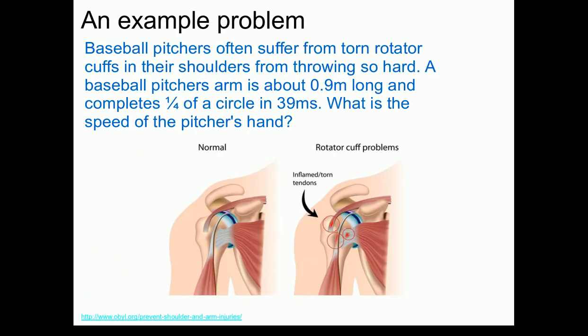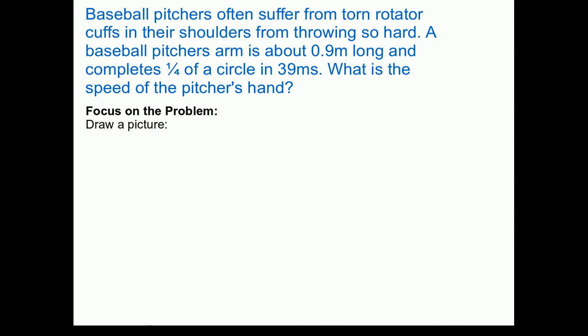Let's look at a short example problem using our problem-solving framework with these terminologies. Baseball pitchers often suffer from torn rotator cuffs from throwing so hard. A baseball pitcher's arm is usually about 0.9 meters, and it completes one quarter of a circle in 39 milliseconds. The question is: what is the speed of the pitcher's hand?